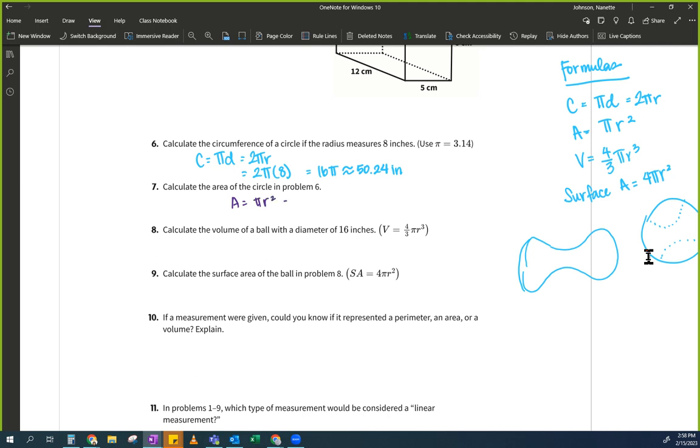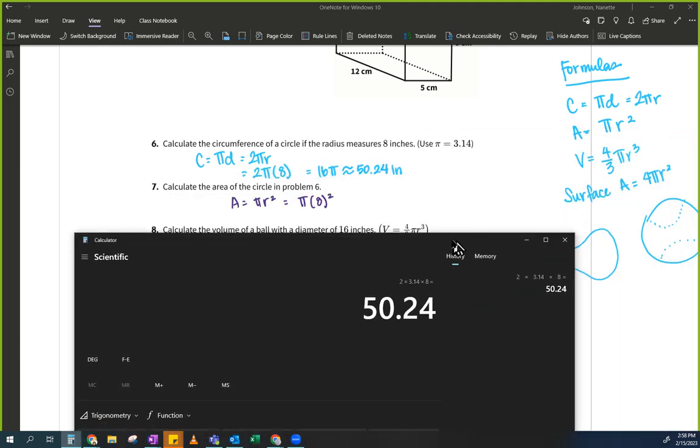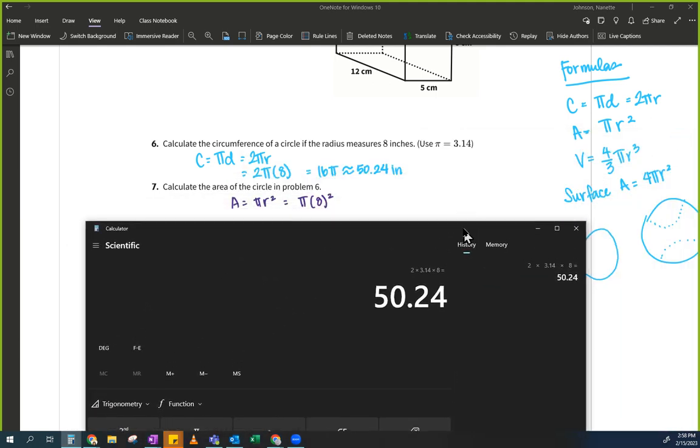So this goes A equals to pi r squared equals to pi times eight squared. I'm actually going to take that whole thing and pulling it into my calculator, right? So here goes that I'm going to put, I'm going to go 3.14 times eight. I can't see to the second. Enter.